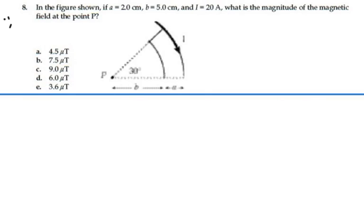Here's problem 38. In the figure shown, if A is equal to 2 centimeters, B is 5 centimeters, I is 20 amps, what is the magnitude of the magnetic field at point P?